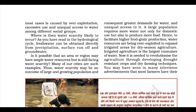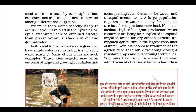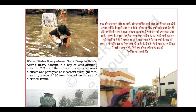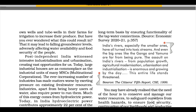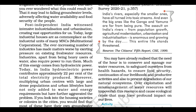To facilitate higher food grain production, water resources are being overexploited to expand irrigated areas for dry-season agriculture. Irrigated agriculture is the largest consumer of water. It is now needed to revolutionize agriculture through developing drought-resistant crops and dry-farming techniques. Most farmers have their own wells and tube wells for irrigation, but this leads to falling groundwater levels, adversely affecting water availability and food security.